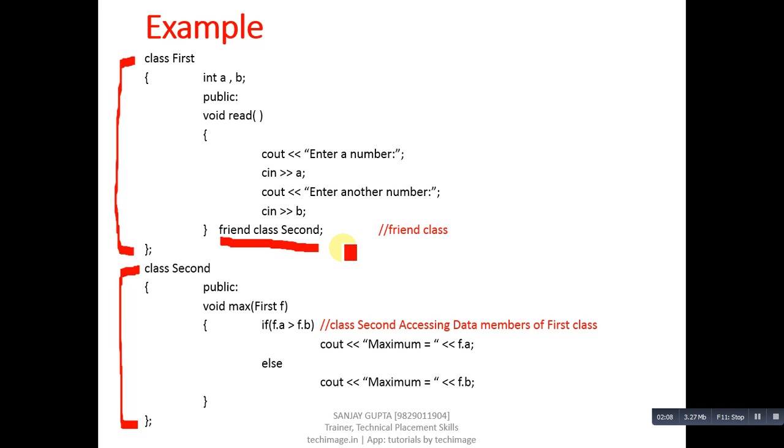Now coming on to Second class. You can see that in public section, function max is defined which is receiving argument which is of First class. Notice that max function is defined inside Second class but it is receiving argument which is of First class.